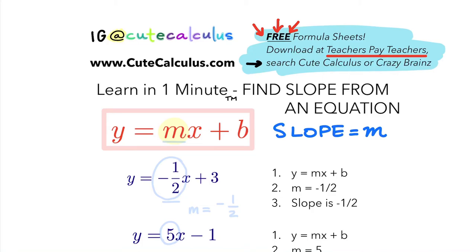Finding slope from an equation is actually rather simple. You just look and see what number is occupying the space for m. m is our slope, so we use this formula: y equals mx plus b.